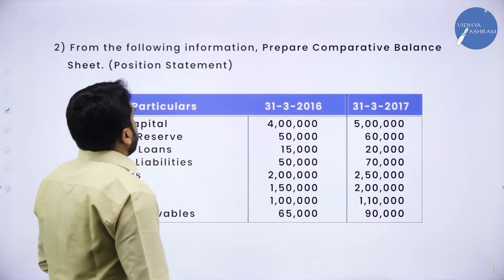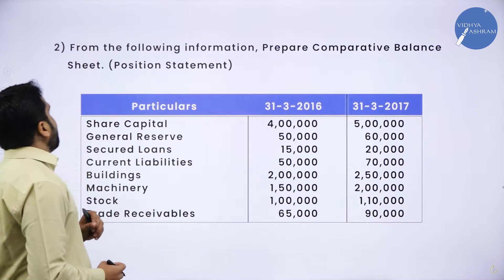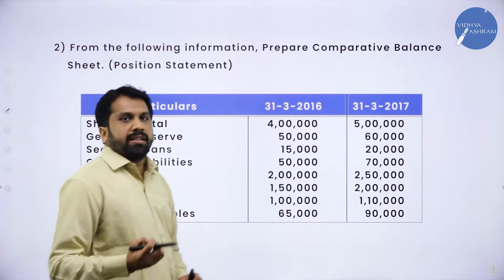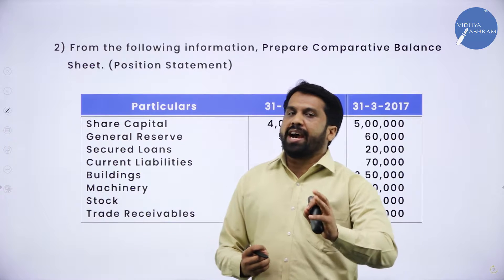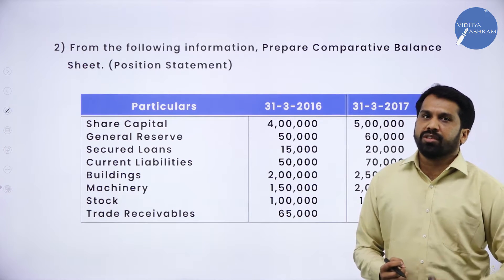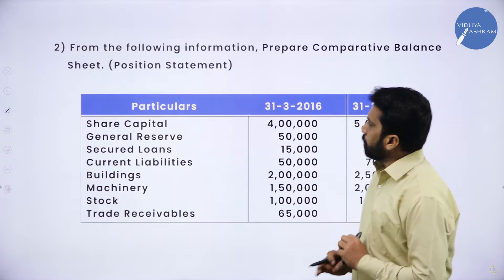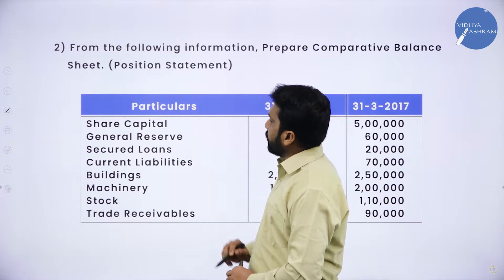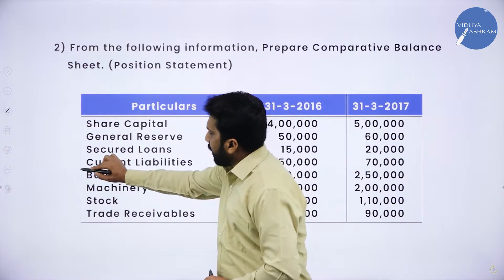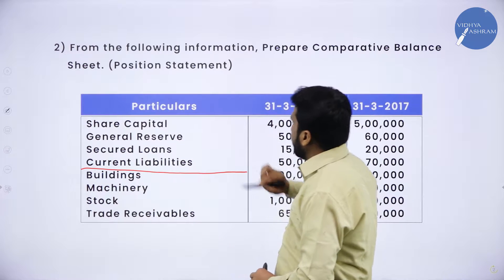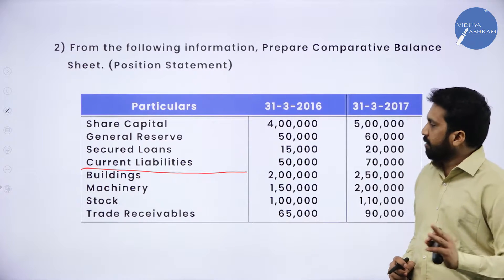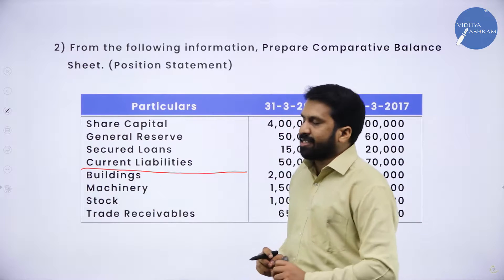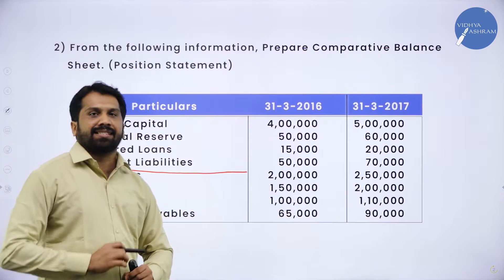From the following information, prepare a comparative balance sheet or position statement. They have given you a balance sheet, and you have to prepare the comparative balance sheet. In this problem, we have: share capital, general reserve, secured loan, and current liability on the liabilities side. On the assets side, we have building, machinery, stock, and trade receivable.